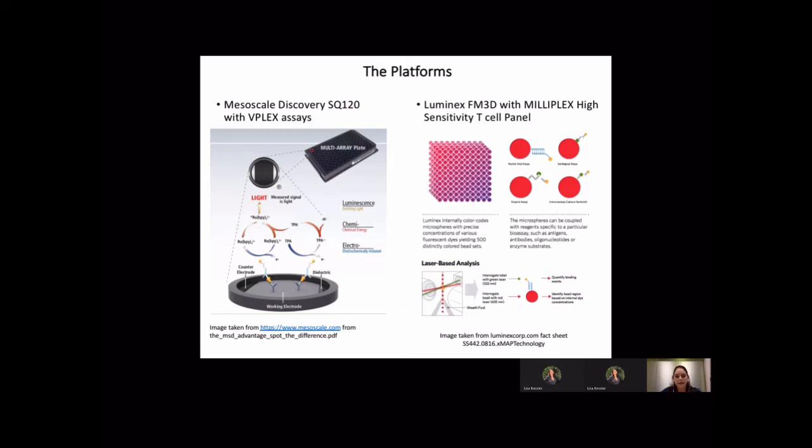The Luminex assay utilizes a unique color-coded magnetic bead which is coupled to a capture antibody. The beads are then mixed together and they have the capability of measuring over 100 different unique analytes per well. A biotinylated detection antibody is then bound to a streptavidin PE prior to detection using a FlexMap 3D Luminex instrument.